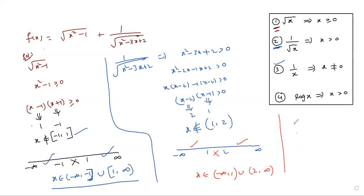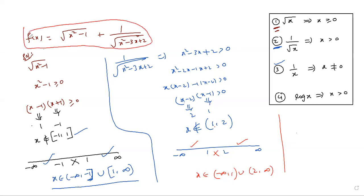Now you should write your final answer as the intersection of the two cases. Whenever you find a combination question like this, take the intersection of both answers. I will explain how to write the intersection in the next class.